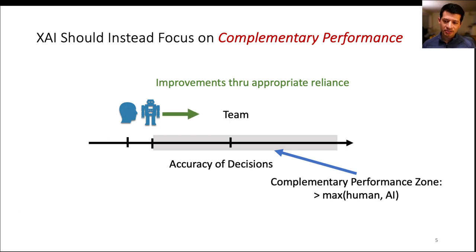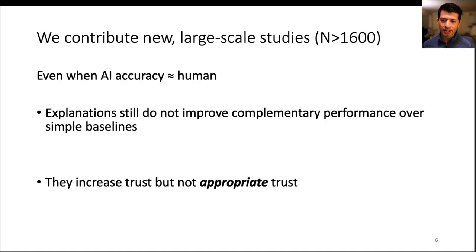But can AI explanations lead to complementary performance? Since all prior works did not observe complementary performance when there was a significant gap between the AI and the user accuracies, using large-scale studies, we investigated the case where the AI and human have comparable accuracy.